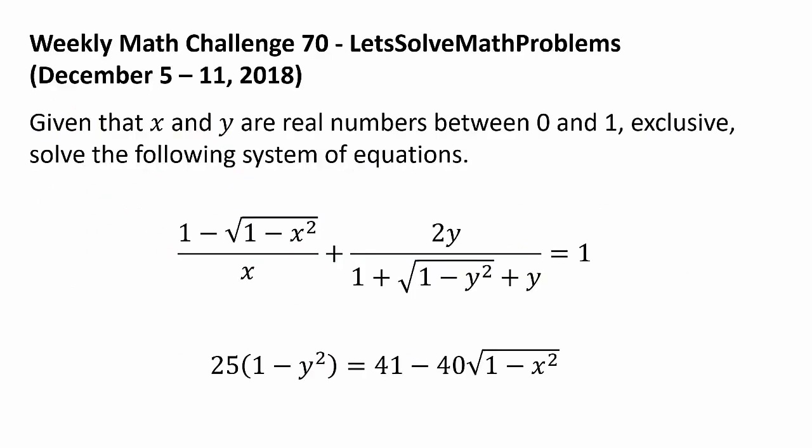Now let's get to this week's challenge. Given that x and y are real numbers between 0 and 1 exclusive, solve the following system of equations. The first equation is: (1 minus √(1 minus x²)) / x + 2y / (1 + √(1 minus y²)) + y = 1. The second equation is: 25(1 minus y²) = 41 minus 40√(1 minus x²).